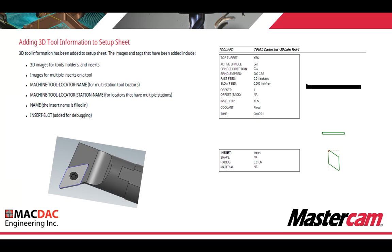Adding 3D tool information to setup sheets. 3D tool information has been added to the setup sheet. The images and tags added include 3D images for tools, holders, and inserts; images for multiple inserts on a tool; machine tool locator name; machine tool locator station; and insert name. As a quick representation, I created a boring bar, ran the setup sheet, and it gives you all the callouts.